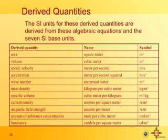Specific volume is basically how many cubic meters there are per kilogram — the reciprocal of mass density. Current density is amperes per square meter, which tells you how much electricity is going through the cross-sectional area of a wire. As the wire gets thicker, you have more area and can push more current through it — like a bigger pipe allowing more water flow. Magnetic field strength is amperes per meter.